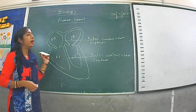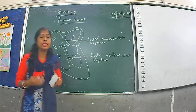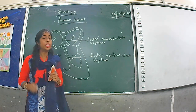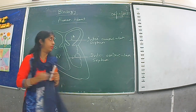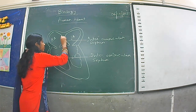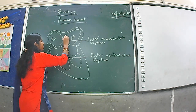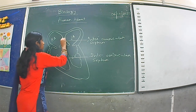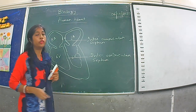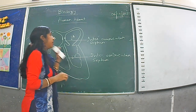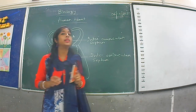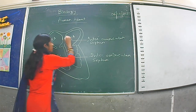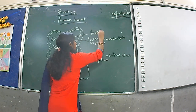Before discussing the internal structure, you need to understand that on the inter-auricular septum there is a slight depression. This depression is known as the fossa ovalis.